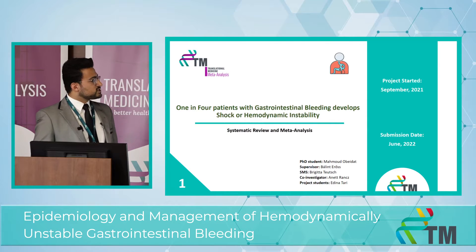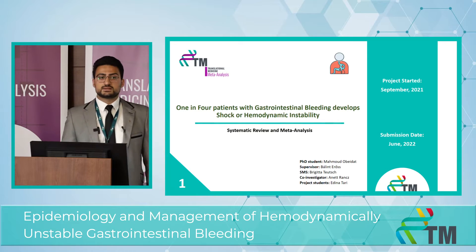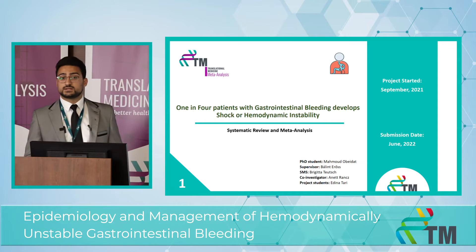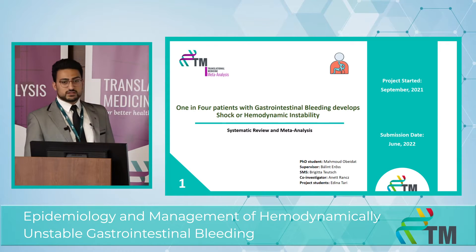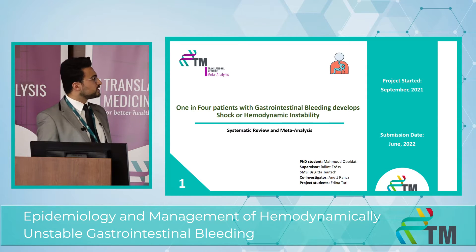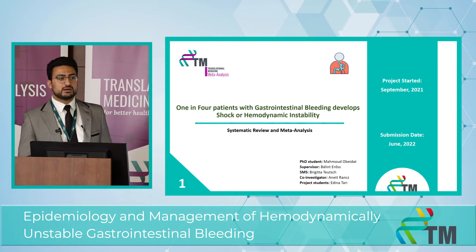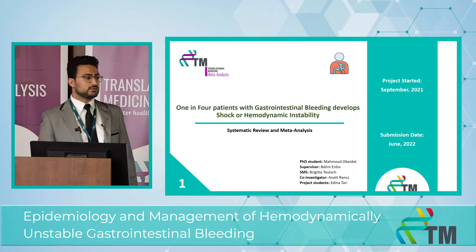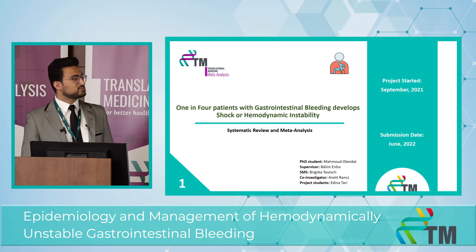My first project is a systematic review and meta-analysis looking at the proportion rate of hemodynamically unstable patients. The title is: 'One in four patients with gastrointestinal bleeding develops shock or hemodynamic instability,' which essentially sums up the whole project. But before arriving at this title, there was a really long journey.